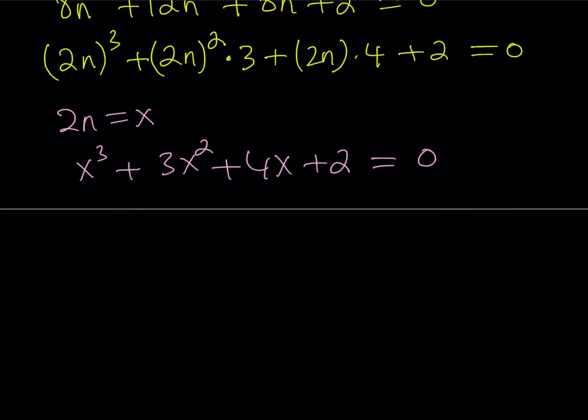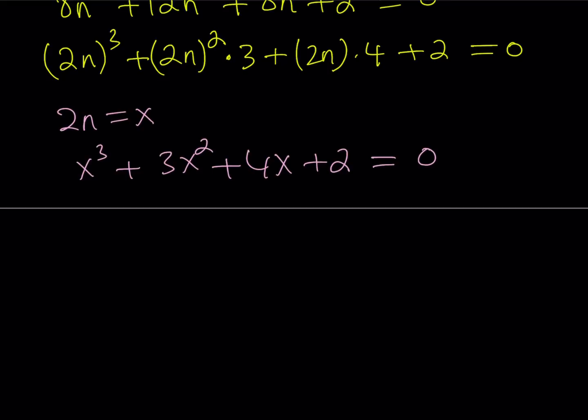That's going to give me x³ + 3x² + 4x + 2 = 0. Now you might be thinking, how am I going to find the solutions? We're going to try to use the rational root theorem, but one of the things that you should always check with polynomial equations is the sum of the coefficients. If p(1) = 0, then x = 1 is a solution.